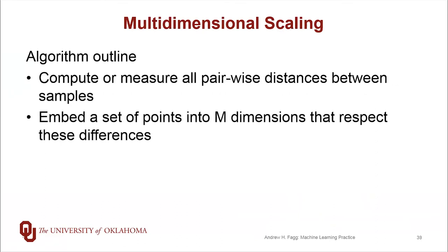Here's an outline of the algorithm, and then we'll turn to the mathematics here. First, we either compute pairwise distances, or we measure the pairwise distances using whatever metric is appropriate. And then what we do is we try to embed a set of corresponding points into an M-dimensional space that respect these differences. And this step actually feels a lot like what we did with locally linear embedding. So let's look at the mathematics.